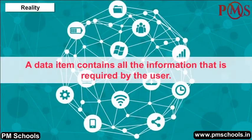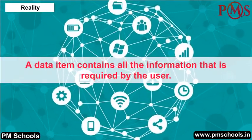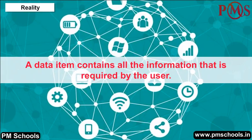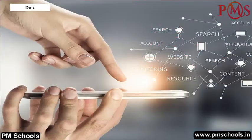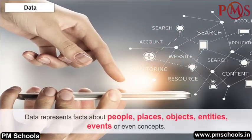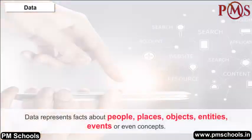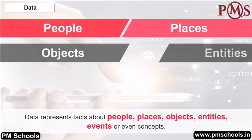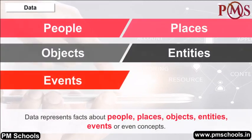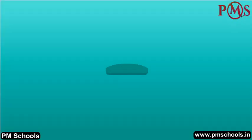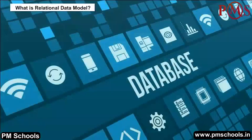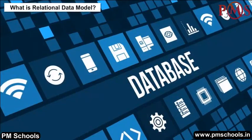Data: Data represents facts about people, places, objects, entities, events, or even concepts. What is a Relational Data Model (RDBMS)? The relational data model uses the concept of relation in a table and creates a relation between the row and column in a table.